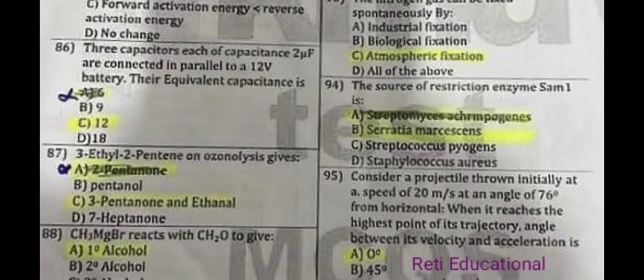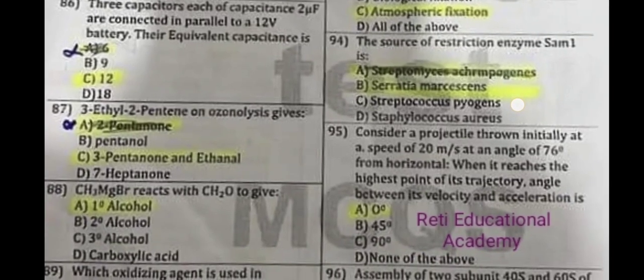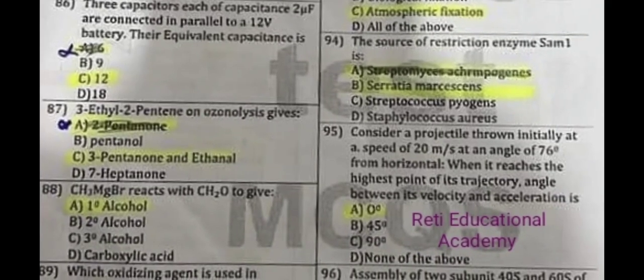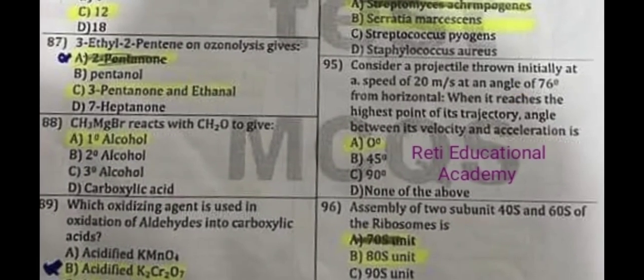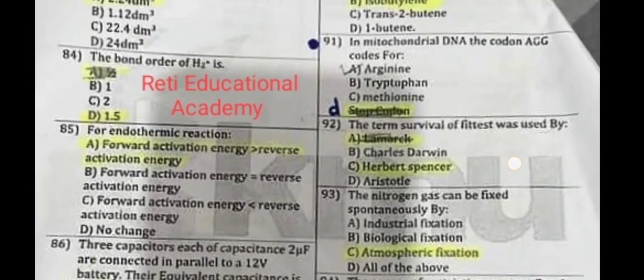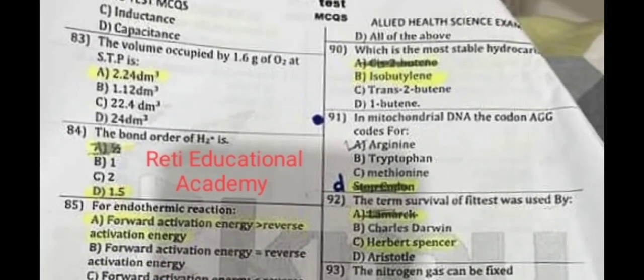Question number 87: Ethyl 1,2-pentane on ozonolysis gives C. Question number 88: The correct answer is A. Question number 89: Which oxidizing agent is used in the oxidation of aldehydes into carboxylic acids? The correct answer is B: acidified potassium dichromate. Question number 90: Which is the most stable hydrocarbon? The correct answer is B.